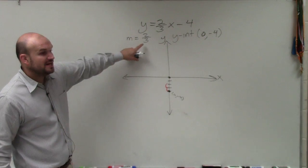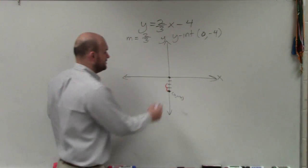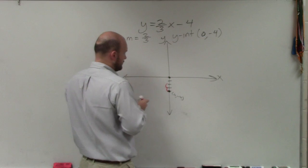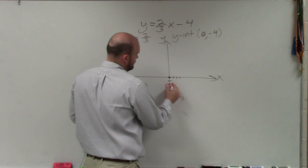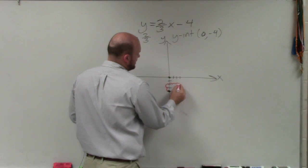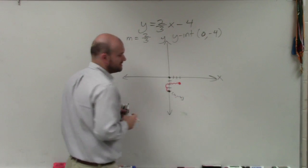And then the change in the x value is a positive 3. So I can go over three units to the right. So one, two, three. And that creates my next point.